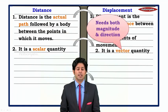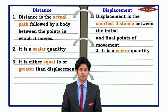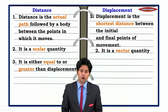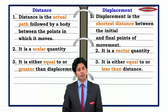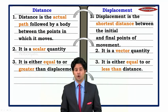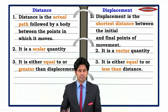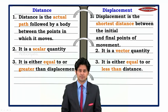Displacement is a vector quantity because it has both magnitude and direction. Third, distance is either equal to or greater than the displacement, whereas displacement is either equal to or less than the distance. This is the difference between distance and displacement. Thank you, students.